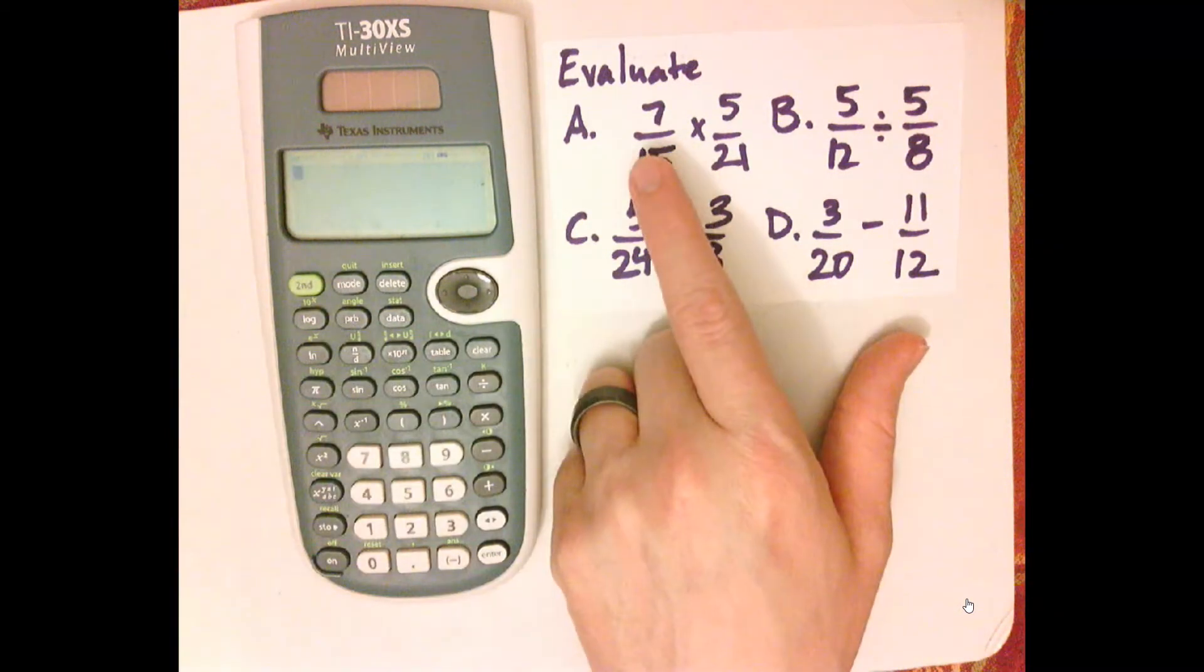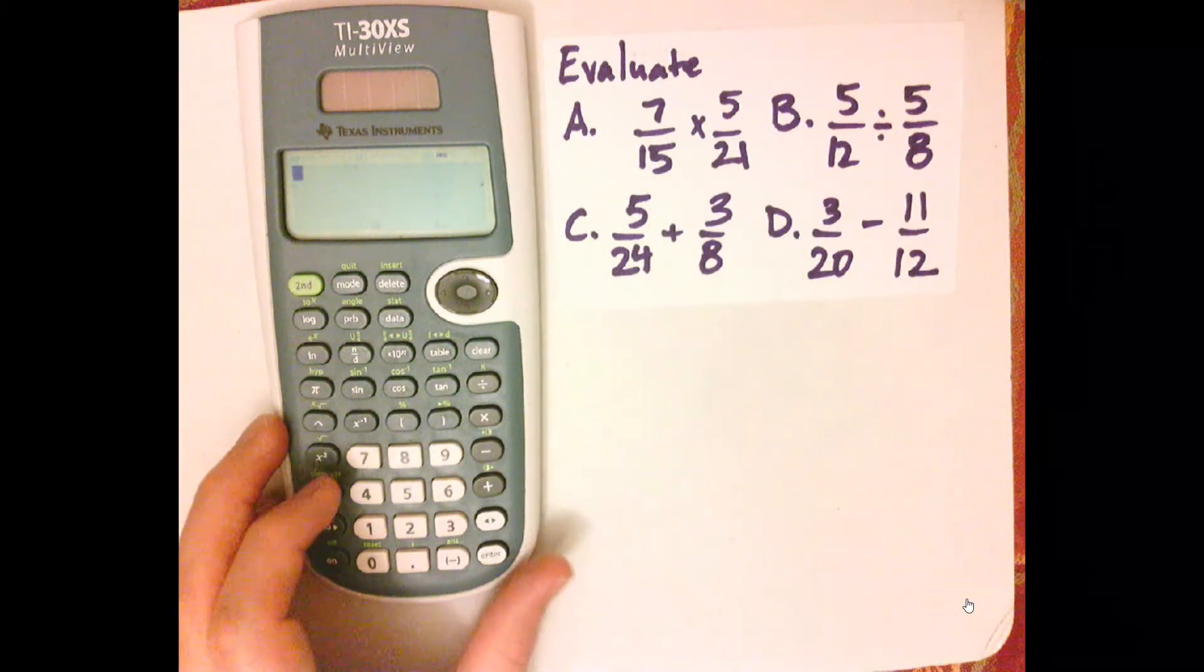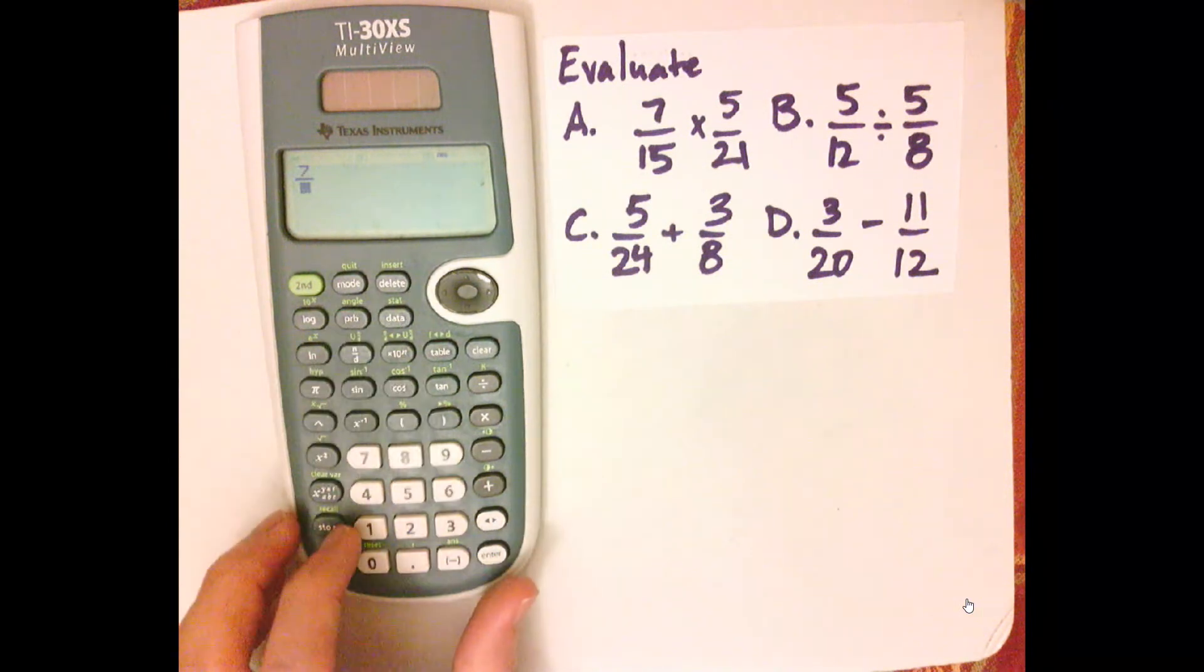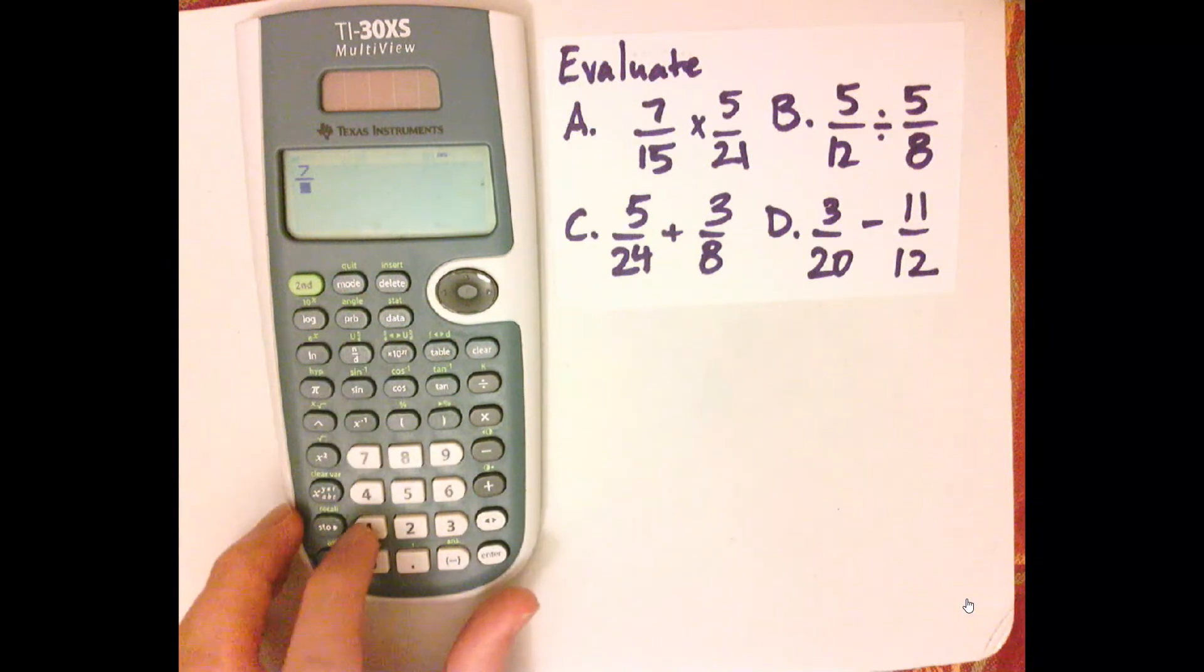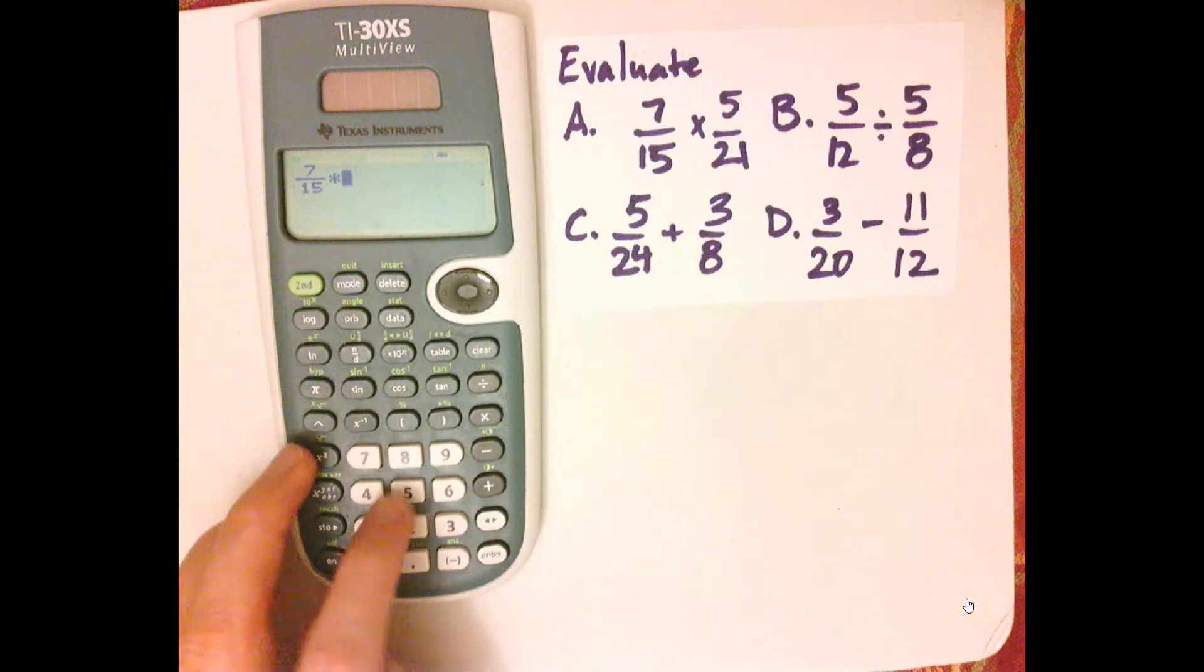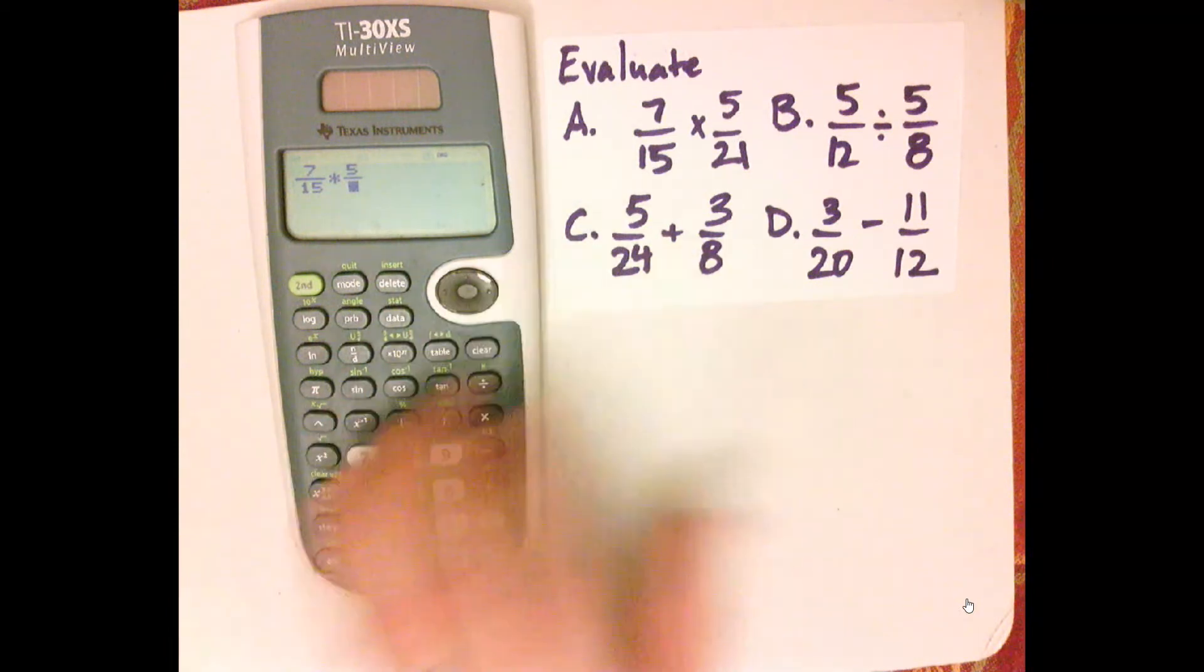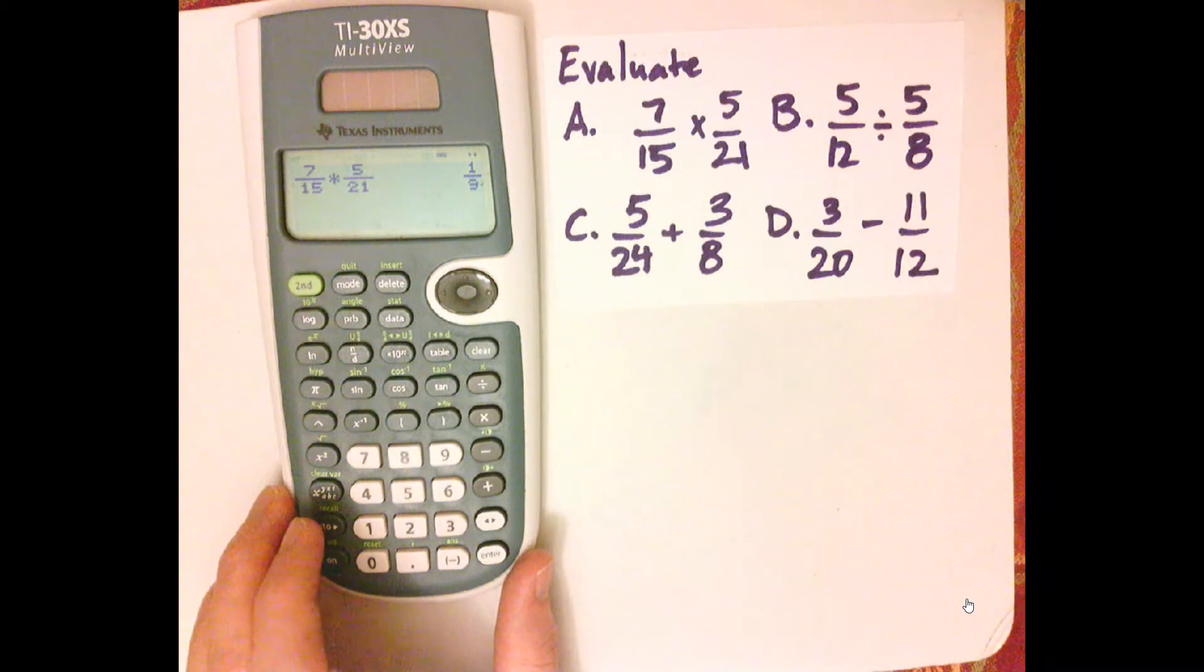Now let's do these, so let's type that one in. So 7, and then the ND button is fractions, so numerator, denominator, so 7 over 15, use the arrow keys, times 5 over 21, Enter. So 1 ninth, let's go across here.